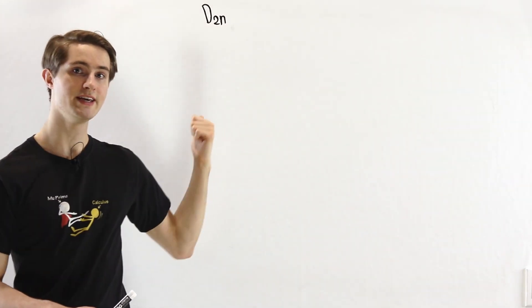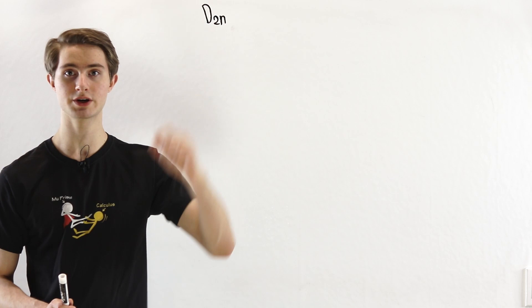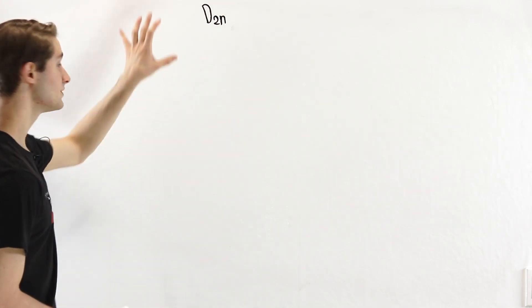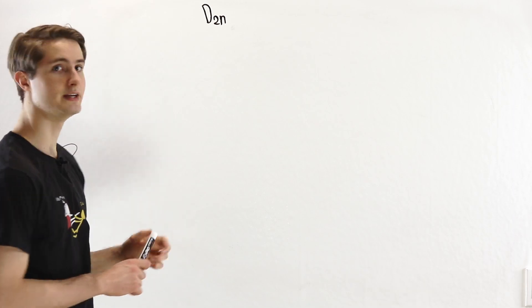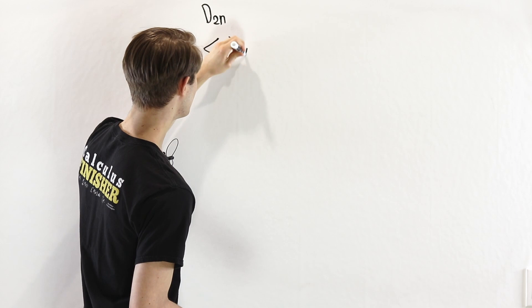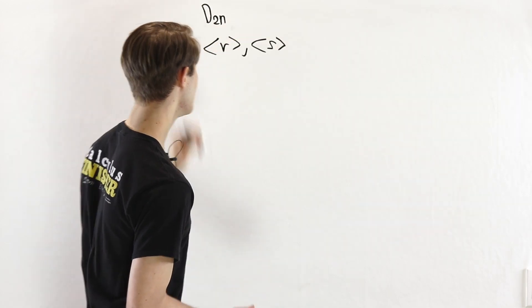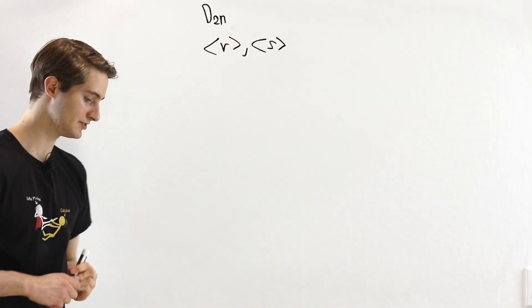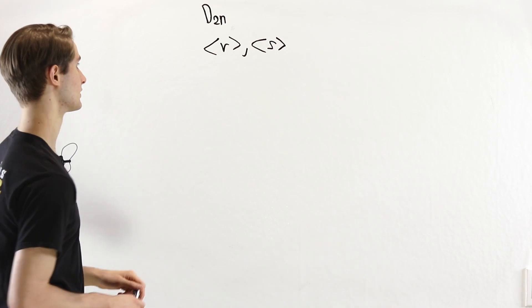We are going to look at an example of an inner semi-direct product using the dihedral group of order 2N. I have another video that explains exactly how semi-direct products work, so you can check the video in the description. In order to get a semi-direct product, our first step is to find two subgroups which are complements in D₂ₙ. We can use the subgroup generated by R and the subgroup generated by S. These turn out to be complements, so let's prove that.